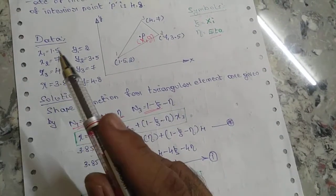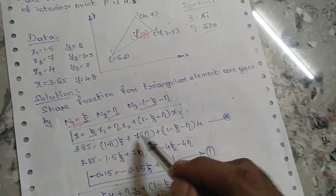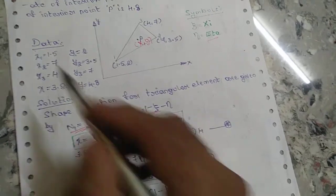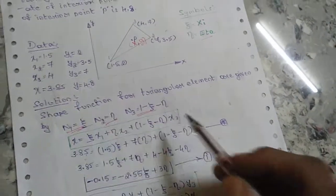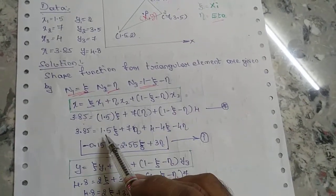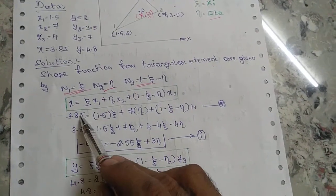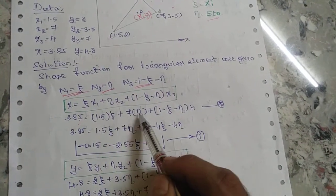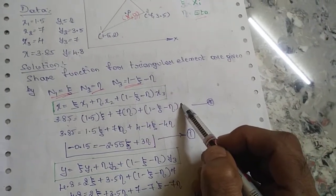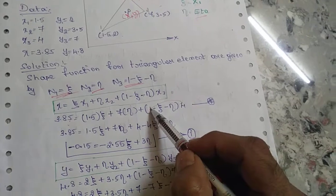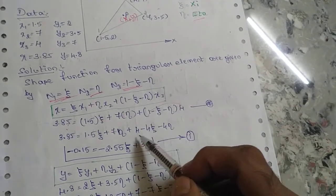The x-value is 1.5. All the x-coordinate values you have to substitute. So 3.85 = 1.5, and now we have to multiply and remove the brackets: 4·ξ, 4·η.